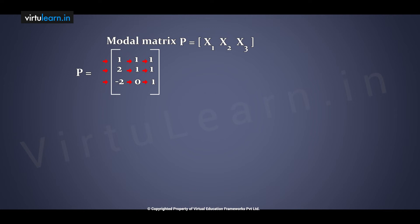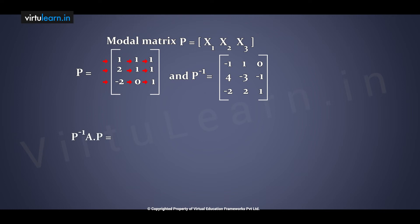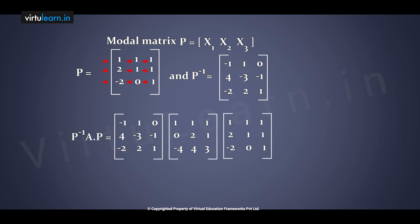P is called the modal matrix. By scientific calculator, calculate P inverse: P inverse equals minus 1 1 0 / 4 minus 3 minus 1 / minus 2 2 1. Now compute P inverse into A into P, entering all three matrices into the calculator.